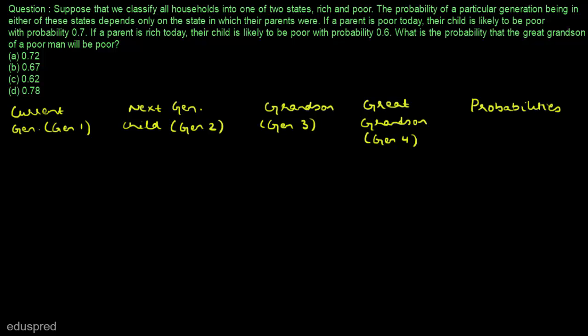Now let's fill the details. We have to find the probability that the great grandson of a poor man will be poor, so let's say the parent in the current generation is poor. In generation number 2, the child of this poor parent could be rich or poor. We are given that if a parent is poor today, their child is likely to be poor with probability 0.7, so this probability is 0.7 and consequently this probability is 0.3.